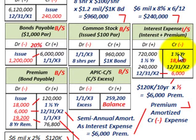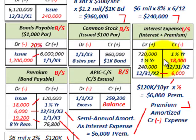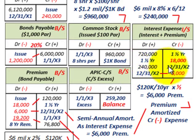Looking at the first year and a half, we'd have had three semi-annual payments totaling $720,000. Then looking at 12/31/X2 specifically — just one semi-annual payment at the end of the second year — that would be $240,000.